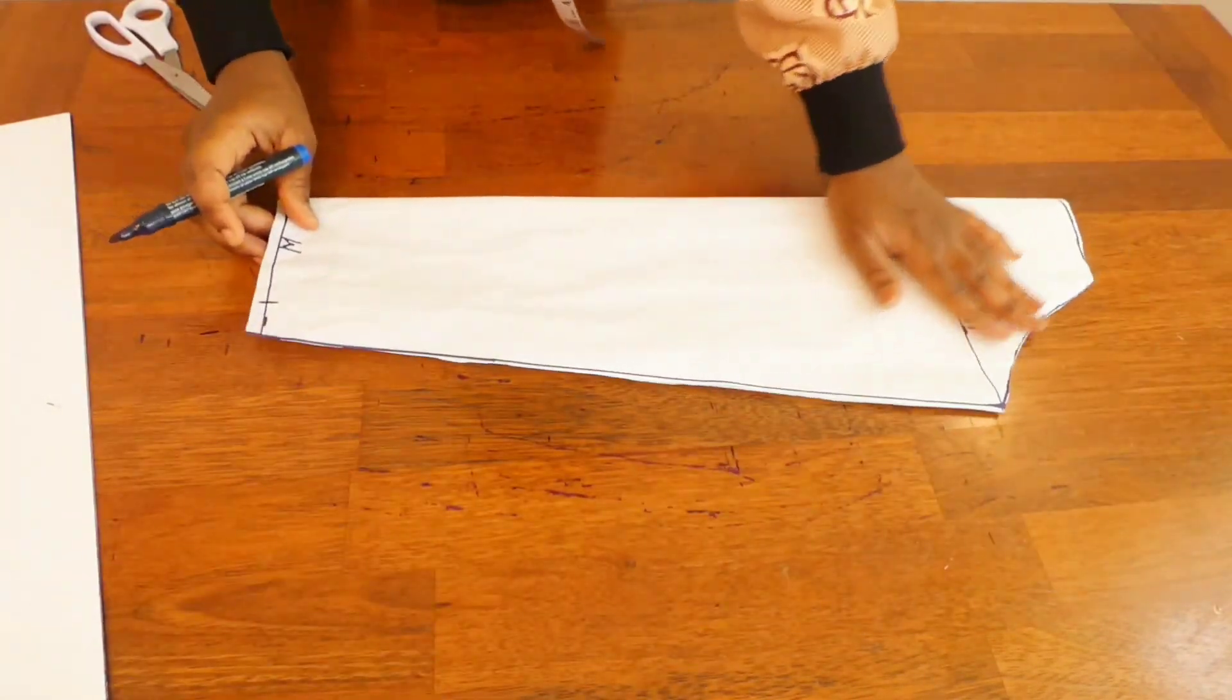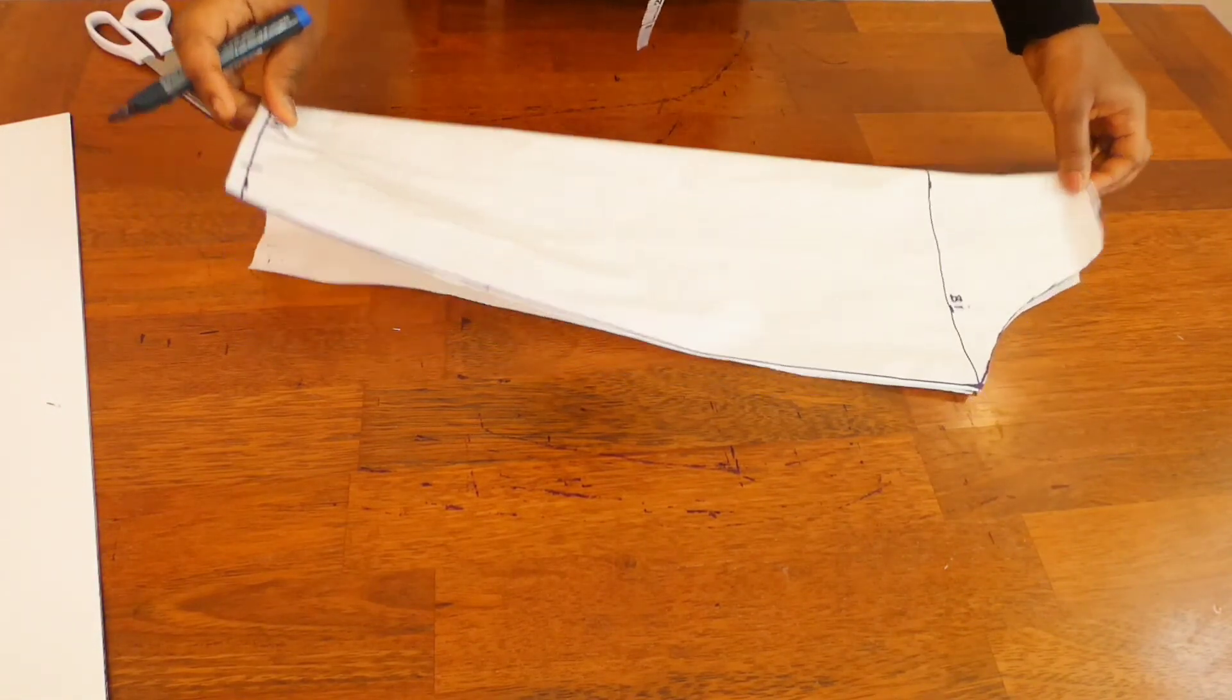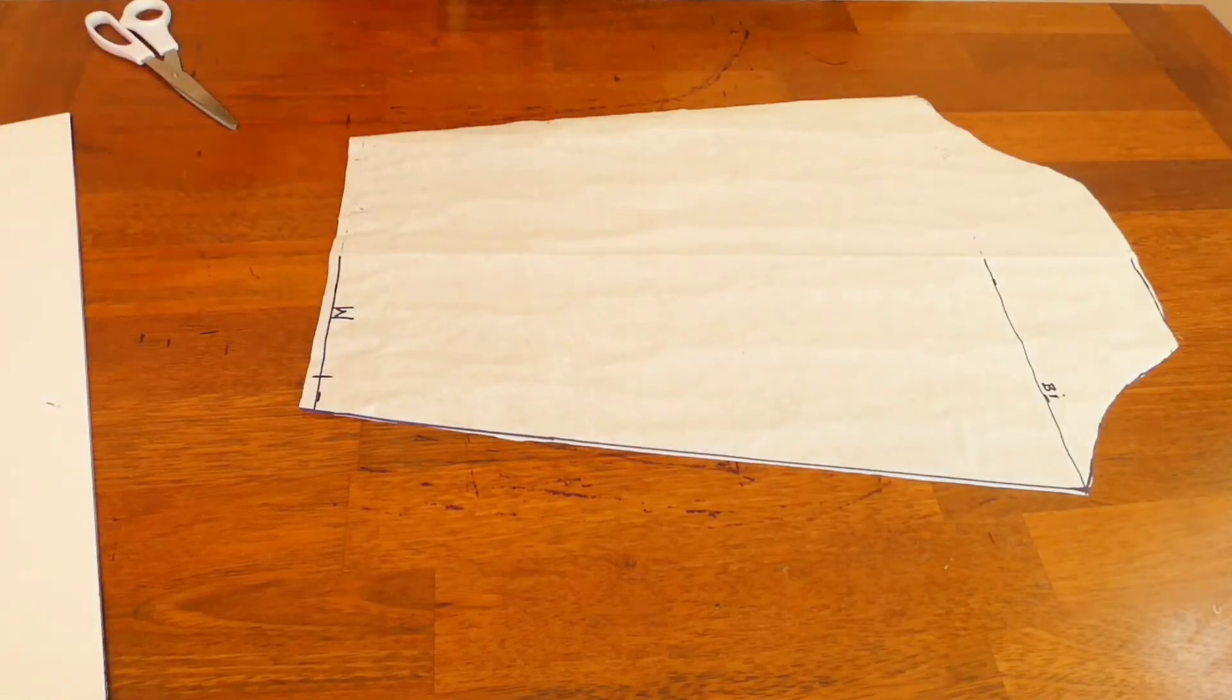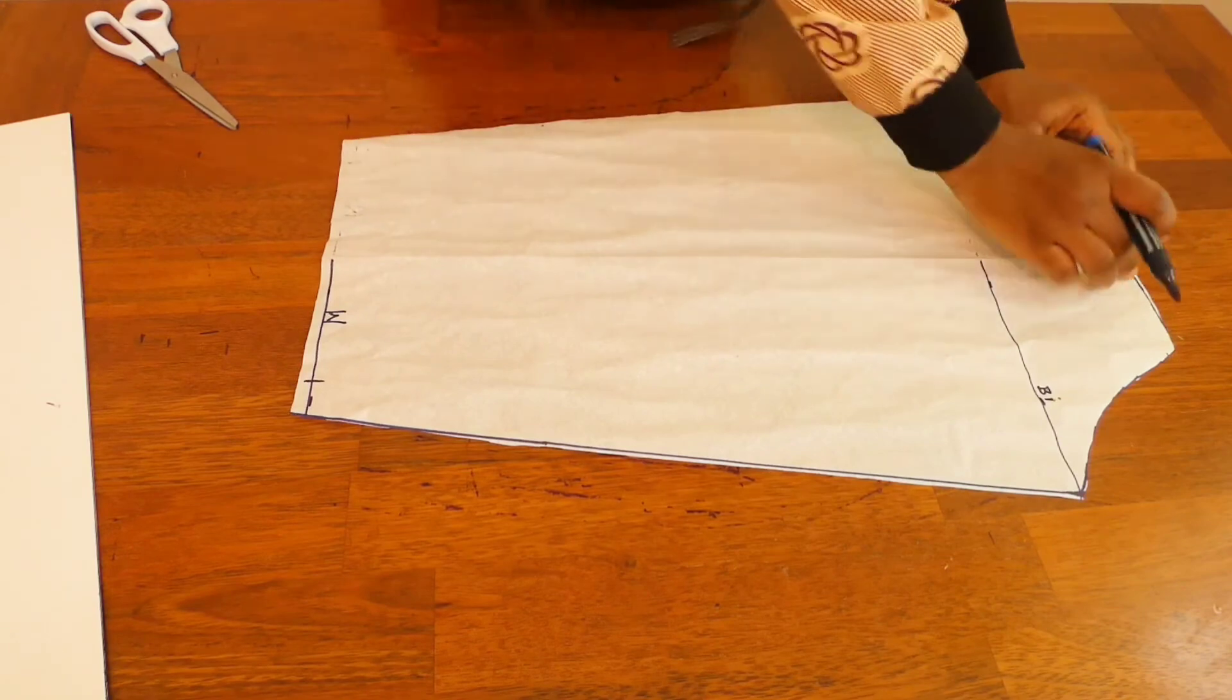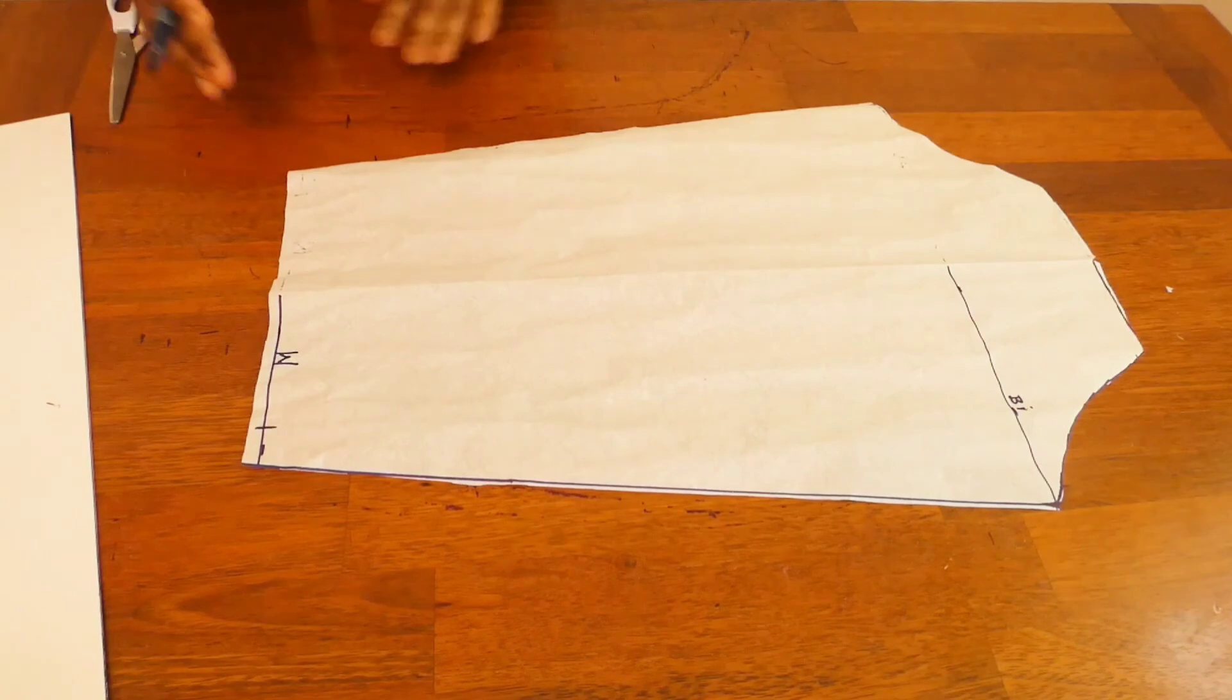So guys, you have your sleeve already cut out. One minute and you're done. If you're used to this, just one minute and you are done cutting your sleeve. Very easy, guys. See, this is opened, so this is the midpoint. You can actually just match it, you can just match it like this to show the midpoint.